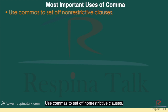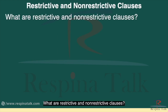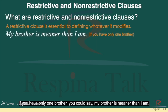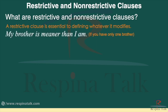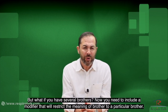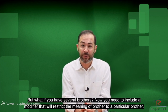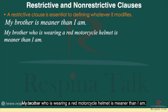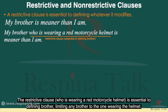Use commas to set off non-restrictive clauses. What are restrictive and non-restrictive clauses? A restrictive clause is essential to defining whatever it modifies. If you have only one brother, you could say 'my brother is meaner than I am.' Because you only have one brother, no modifier is necessary to distinguish which brother you mean. But if you have several brothers, you need a modifier that will restrict the meaning of 'brother' to a particular brother. For example: 'My brother who is wearing a red motorcycle helmet is meaner than I am.' The restrictive clause 'who is wearing a red motorcycle helmet' is essential to defining 'brother,' limiting it to the one wearing the helmet.